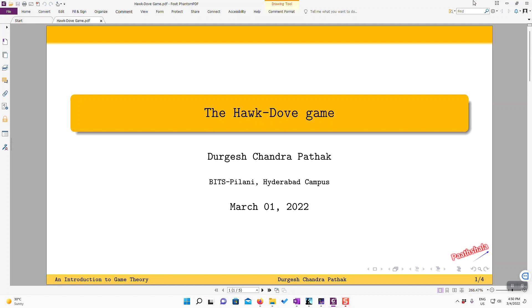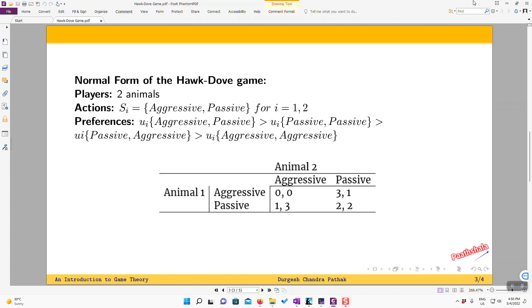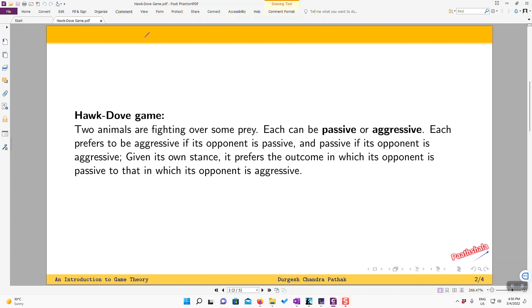Hello friends, today we will discuss a game of Hawk and Dove. So basically, there are two animals which are fighting over some prey. Each animal can choose to be passive or aggressive. If they are aggressive, they will not let the prey go. If they are passive, they will let the prey go.